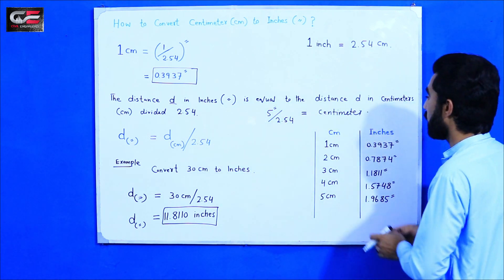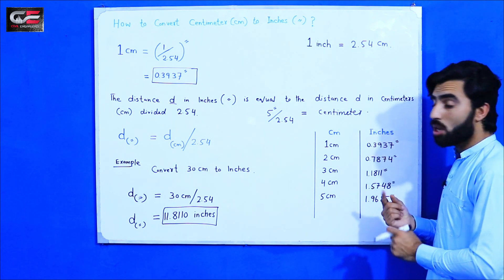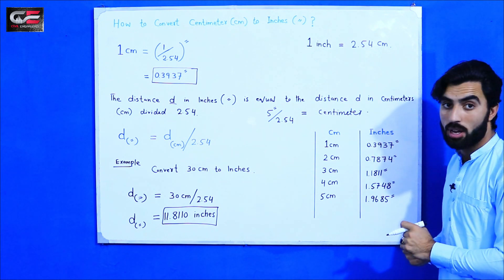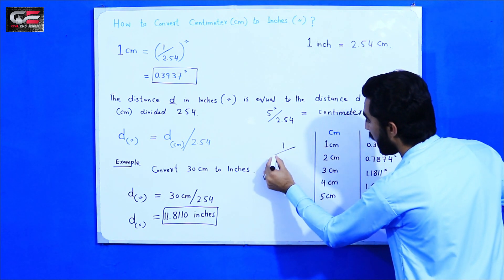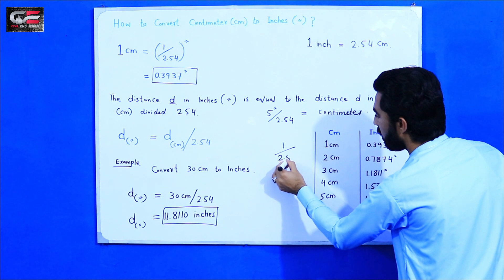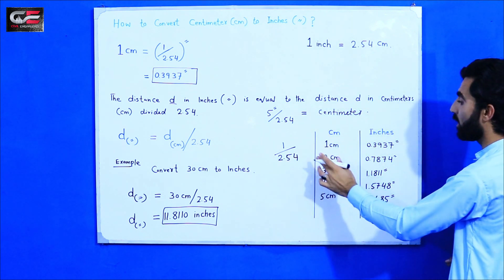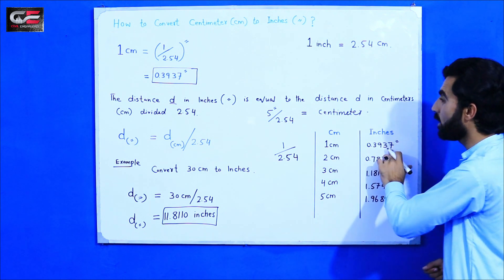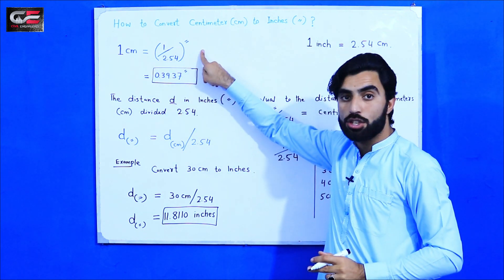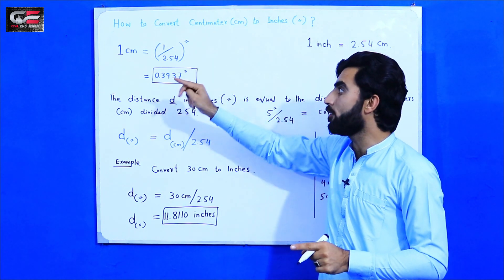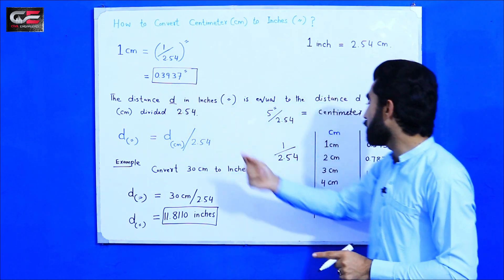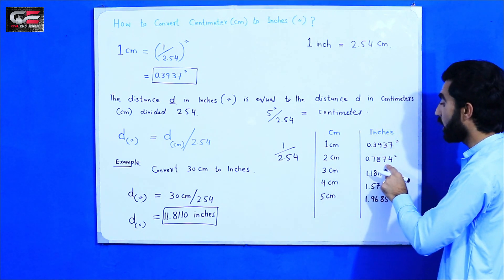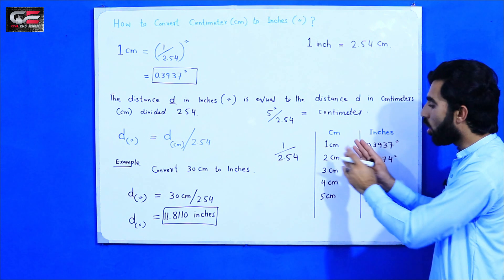Here is the unit conversion table from centimeter to inches. One centimeter equals 0.3937 inches, because 1 divided by 2.54 gives 0.3937. Two centimeters equals 0.7874 inches. For all centimeter values, divide by 2.54 to get the value in inches.